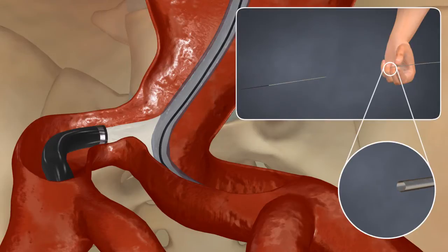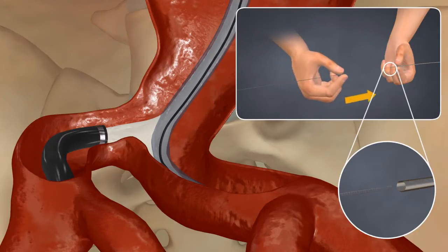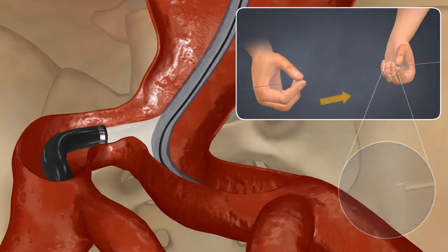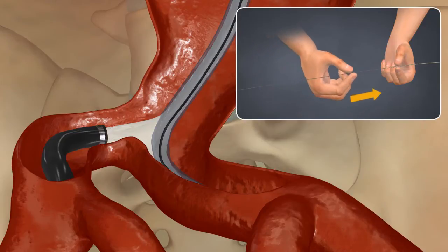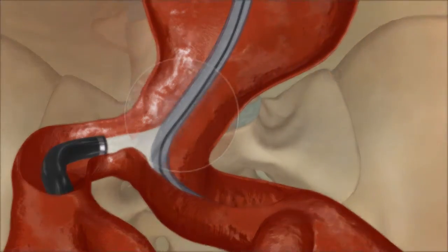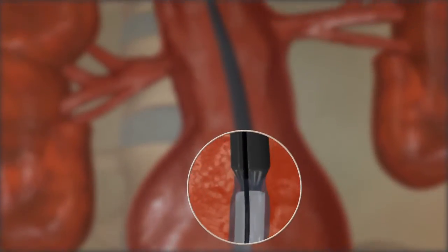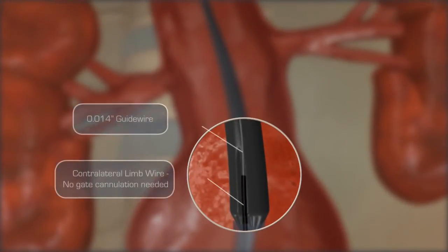Remove the floppy tip from the contralateral limb wire and advance an 014 guidewire through the hollow center of the contralateral limb wire. Continue advancing the wire until it is in the thoracic aorta.